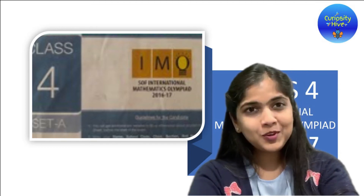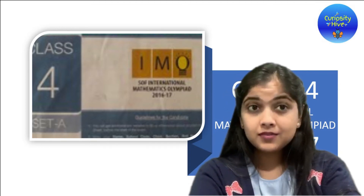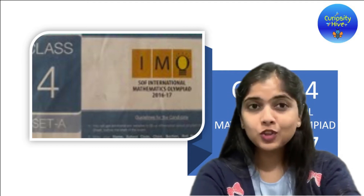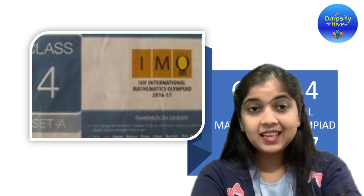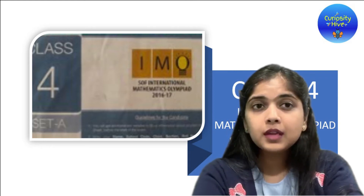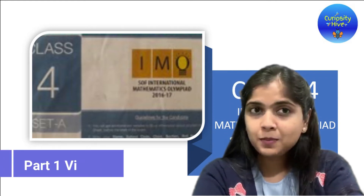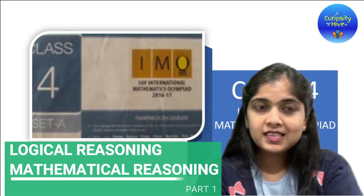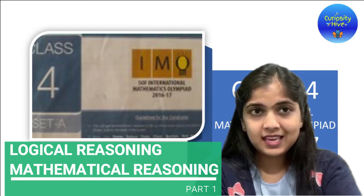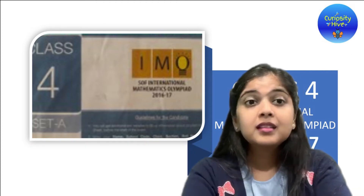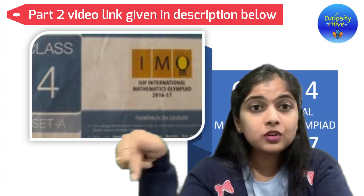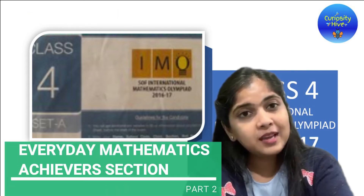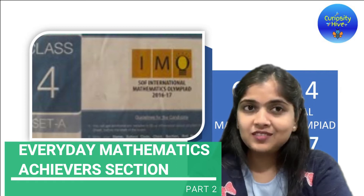Hello friends, welcome to Curiosity Hive. In this video, we are going to solve the IMO class 4 paper for the year 2017. We are going to solve this paper in two parts. In the first part, that is this video, we are going to solve the logical reasoning and the mathematical reasoning section. In the second part, the link of which is given in the video description box below, we are going to solve the everyday mathematics and the achiever section.